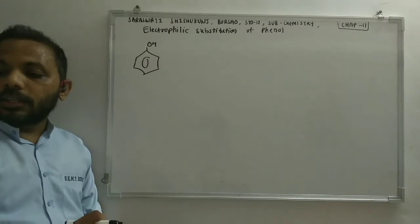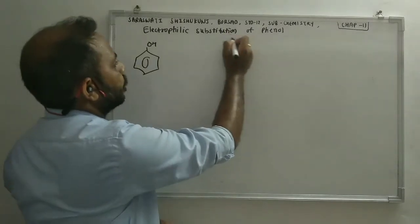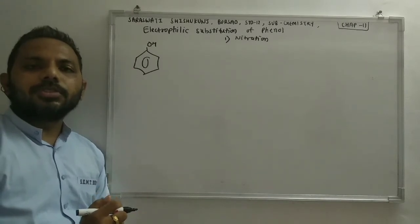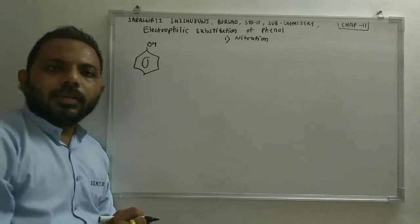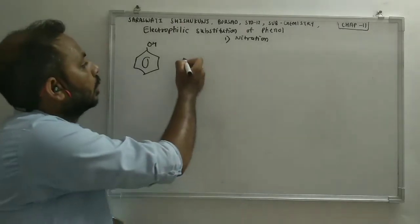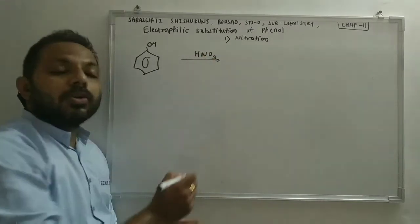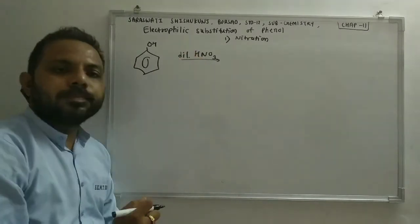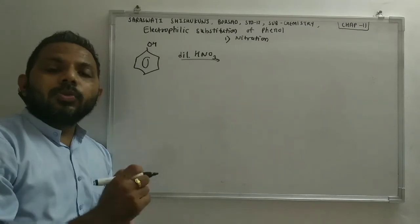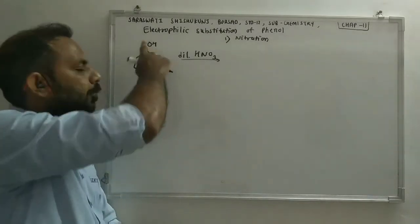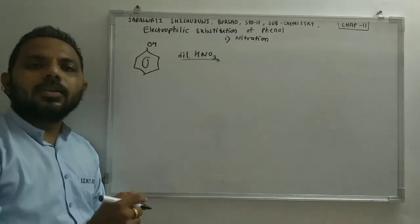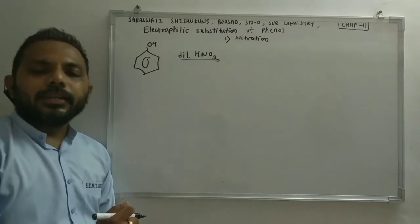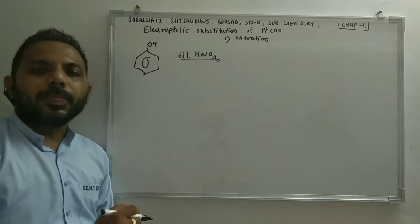The first electrophilic substitution reaction we will discuss is nitration. For nitration we use HNO3, since nitric acid provides the nitro group. Here we use dilute HNO3. Now there are two types of substituents: ortho-para directing and meta directing, which we studied in standard 11. The OH group is ortho-para directing, as discussed in the previous video.